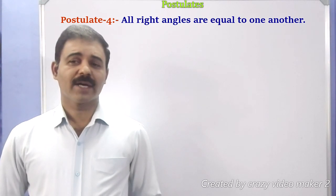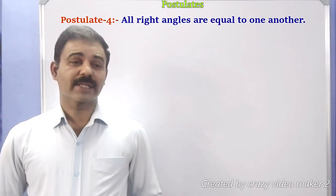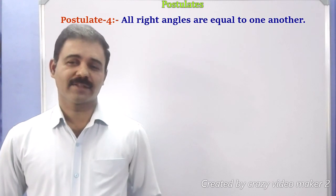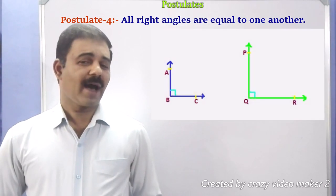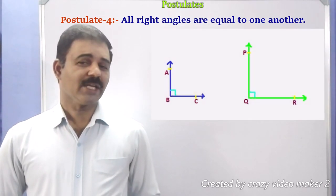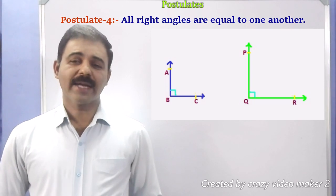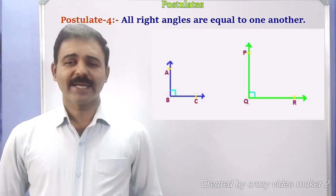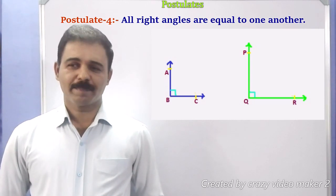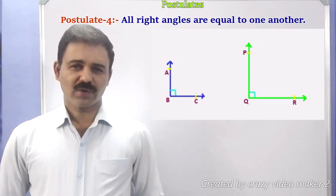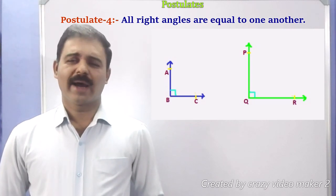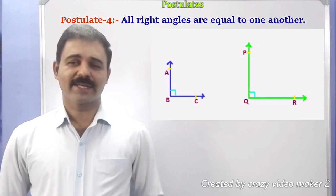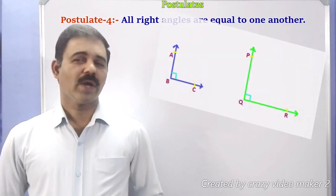Postulate 4: All right angles are equal to one another. Yes, all right angles are equal to one another. In the first figure, angle ABC is a right angle. In the second figure, angle PQR is also a right angle. When we consider angle ABC and angle PQR, both are equal to 90 degrees. Therefore, angle ABC equals angle PQR — all right angles are equal to one another.